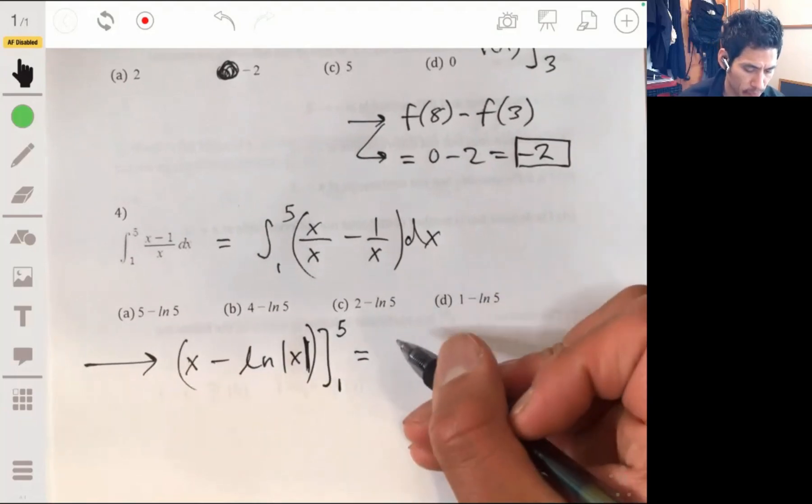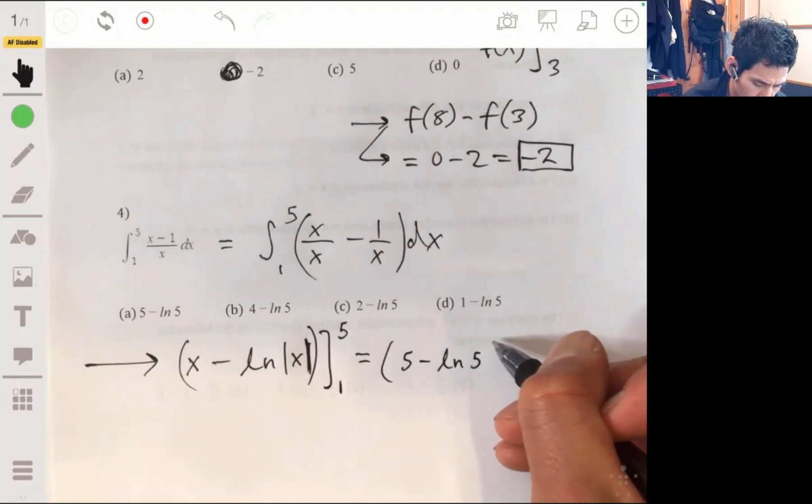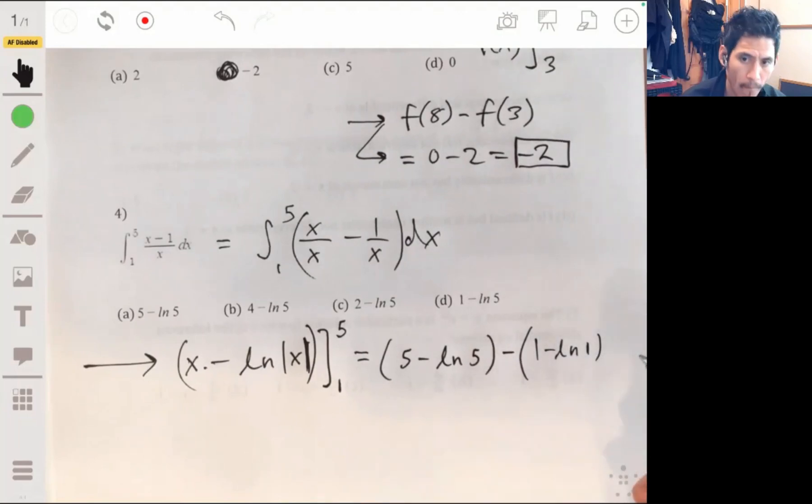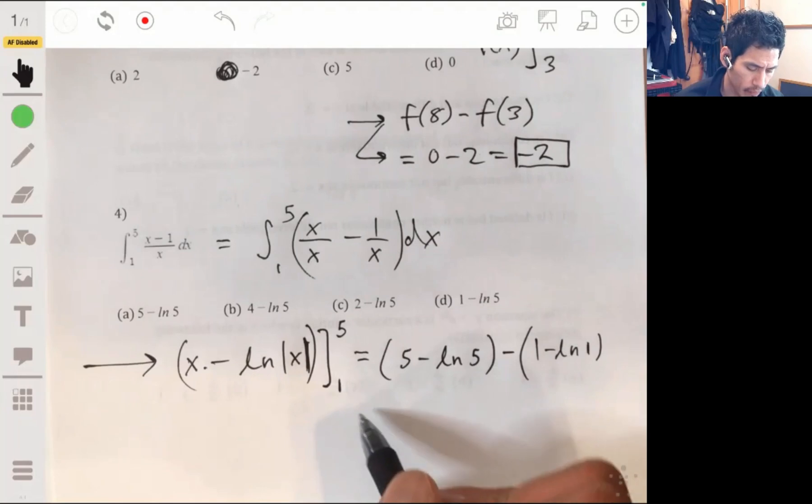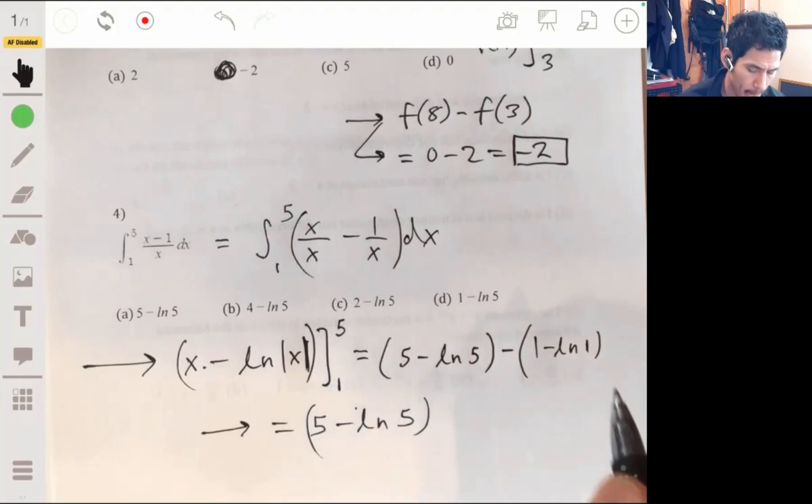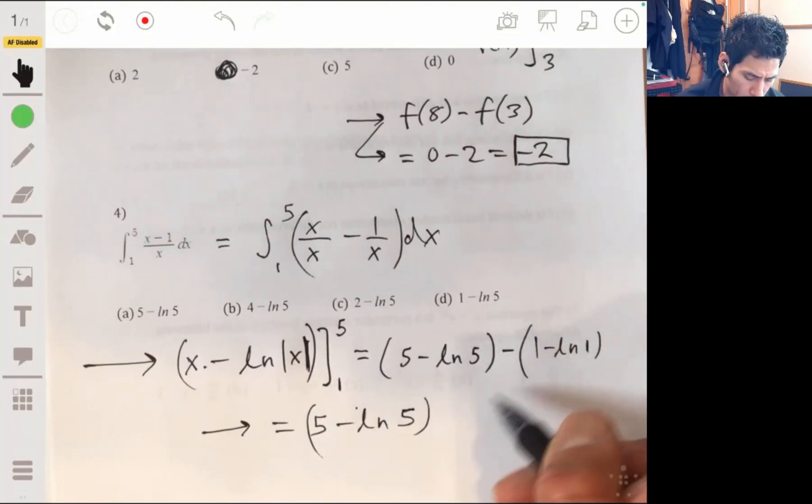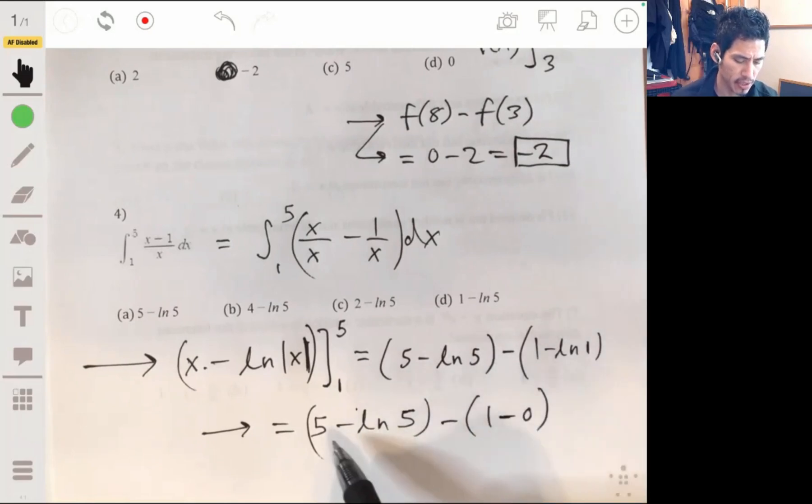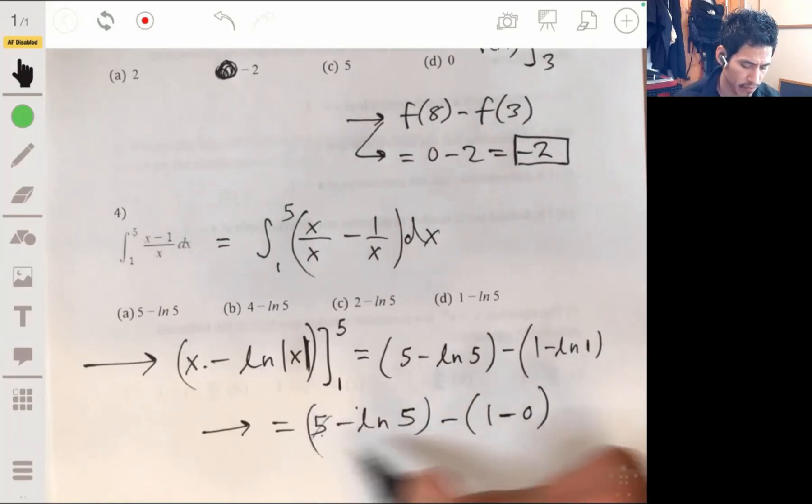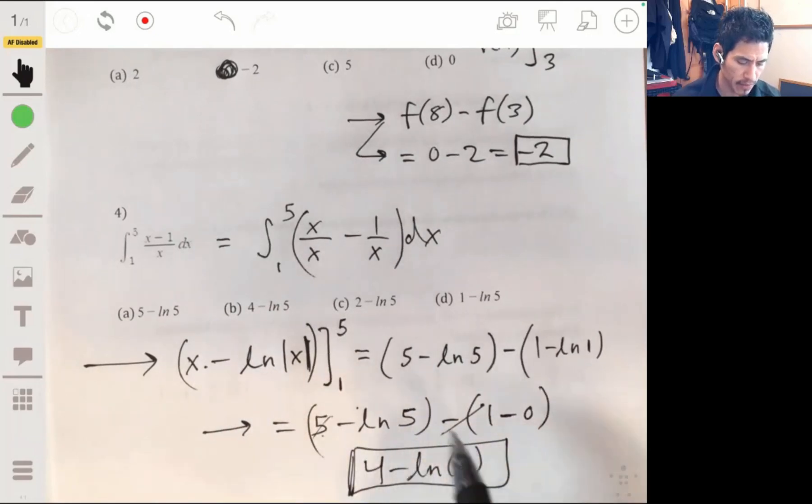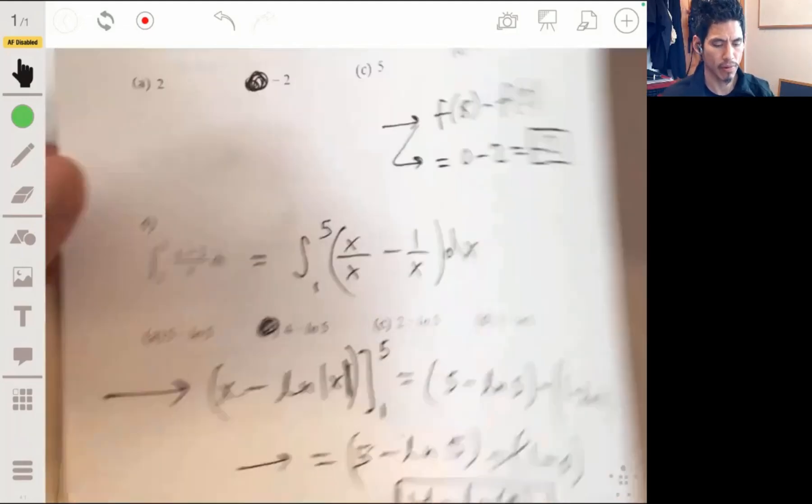Evaluating this, we'll get 5 minus the natural log of 5 minus 1 minus the natural log of 1, which will give us 5 minus the natural log of 5 minus 1. And natural log of 1 is just 0. So, minus 1 minus 0. So, we just have 5 minus 1. So, we have 4 minus the natural log of 5 as our answer. So, the answer will be b.